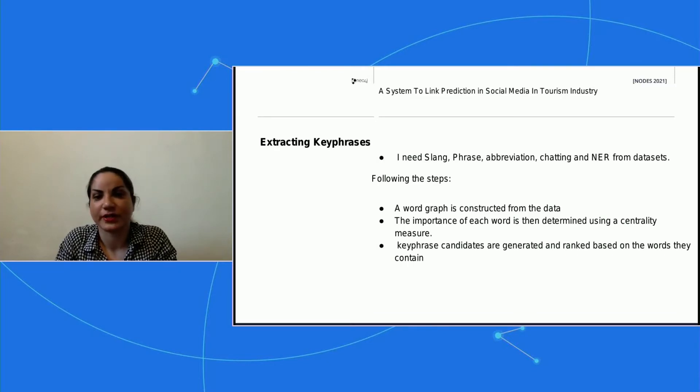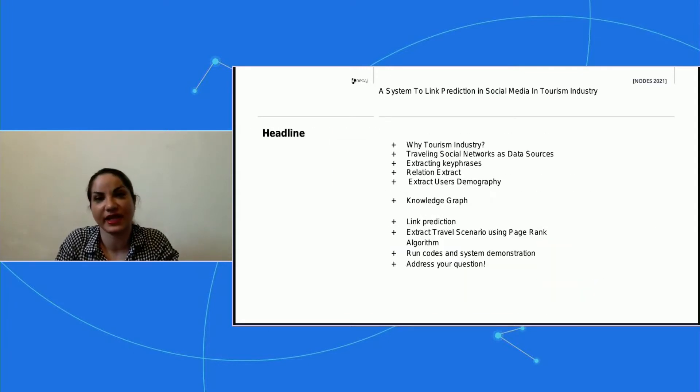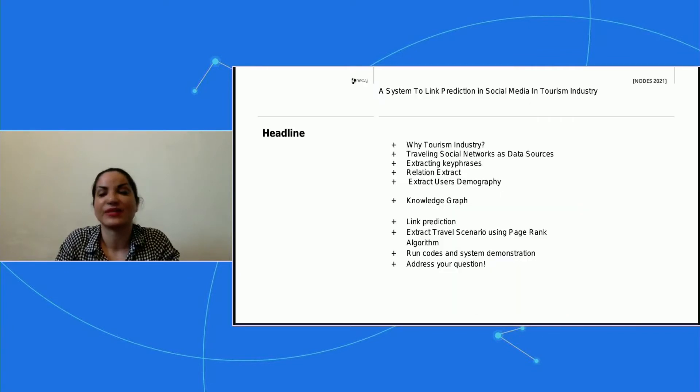I extracted topics, named entity recognition, user demography, and constructed the first step of knowledge graph based on time. After that I used another module from knowledge graph and predicted some links which are promising, which means which are hidden. I used Neo4j. After all, the core value of this system which was really high value for me was to extract travel scenarios.